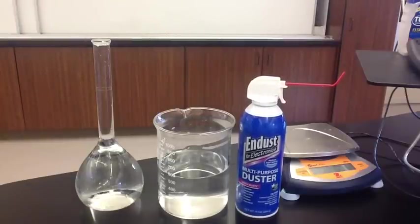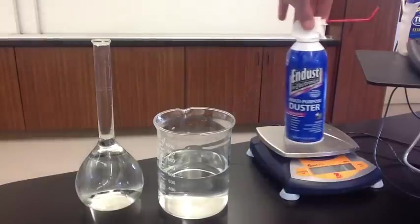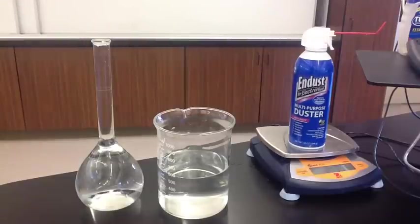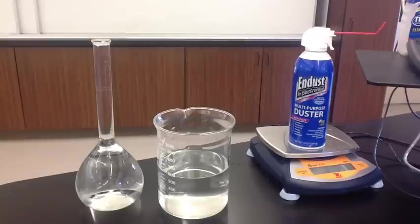What we're going to do is use the equation PV is equal to nRT. We'll measure the pressure, the volume, and the temperature, and use that to find out how many moles of gas we have. And then we're also going to use the balance here to measure the mass of gas. So we'll put our can of gas on the balance right now. It's 373.4.